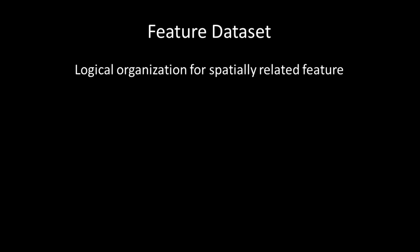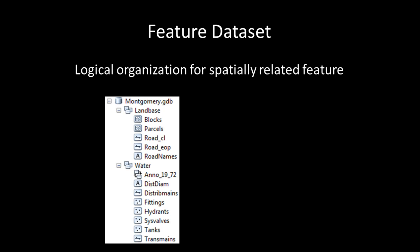A feature dataset contains spatially related features. You can think of a feature dataset as a logical organization container for various feature classes — for example, storing all of the information about land use for a city in one feature dataset, and all of the information about water resources for a city in a different feature dataset. Note how each feature dataset contains multiple types of feature classes. It is also important to note that all feature classes inside a feature dataset must be referenced to a common coordinate system.